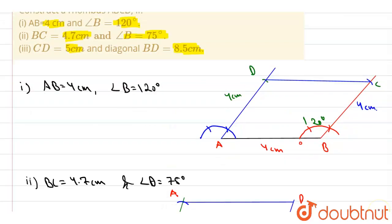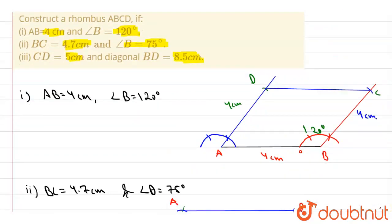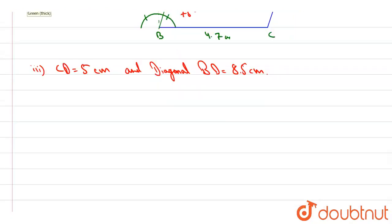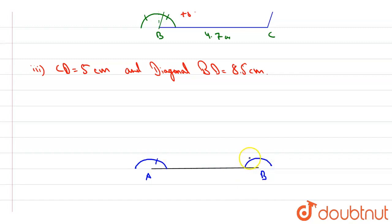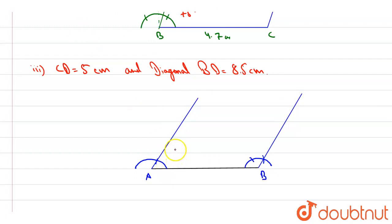For the third construction, we are given CD=5cm and diagonal BD=8.5cm. Draw a base line AB of any measure, then construct a 60° angle. Draw arcs to make 60° on both sides. Now the diagonal BD is the angle bisector of angle A, so from the two points of the 60° arc, cut intersecting arcs above to find the bisector direction.